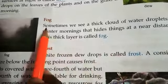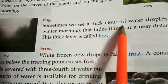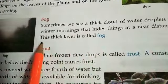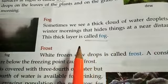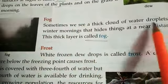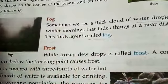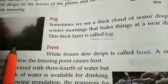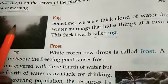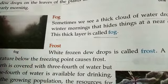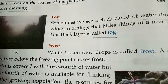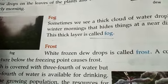Sometimes we see a thick cloud of water droplets on winter mornings that hides things at a near distance. This thick layer is called fog. In foggy conditions, there are so many water droplets in the air that we cannot see anything clearly.